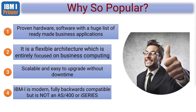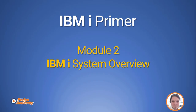IBM i is a modern operating system, fully backwards compatible with your old AS400 and iSeries applications. But that does not mean it's an AS400 — it is not an AS400, it is not an iSeries. You have a Power System running the IBM i operating system. That takes us on to module two, which will be coming up shortly.